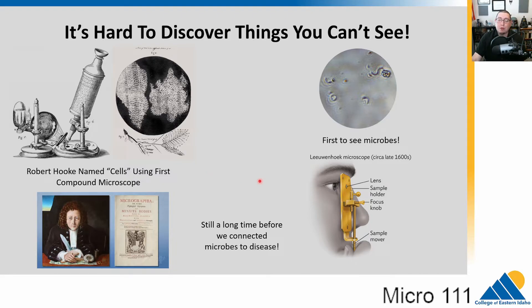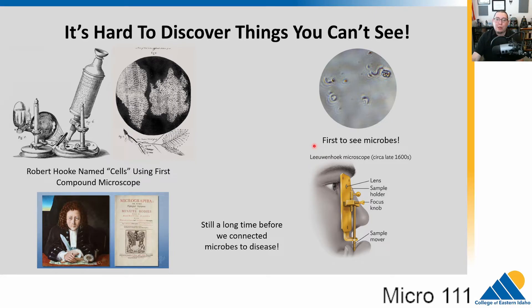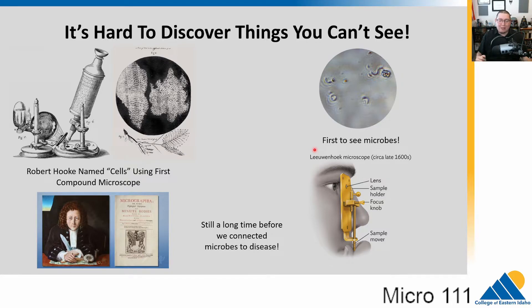Another person named van Leeuwenhoek — he was Dutch, making lenses for magnifying glasses. He worked in a cloth shop where they would look at threads under lenses. He made such a powerful lens that he was the first person to observe microbes. We can actually work from his drawings and descriptions to figure out what he might have been looking at. But it's one thing to know there are microscopic things out there — it took a long time still to connect microscopic organisms with disease, because so many microbes don't cause disease.